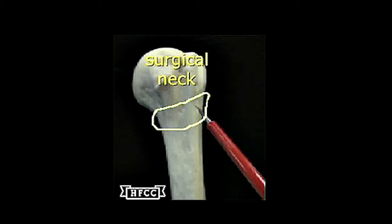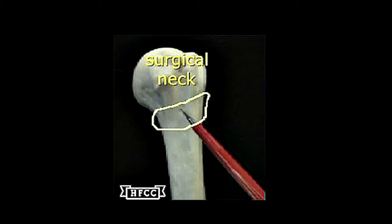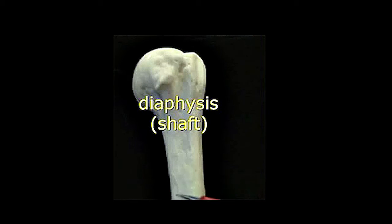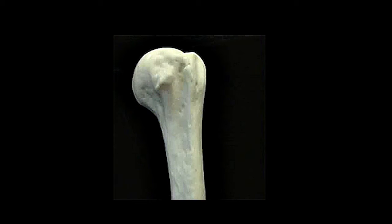The surgical neck, this is the part of the humerus that tends to break, and so surgery is needed here to reattach it and hold it together. And here's the diaphysis that's continuous with the distal end that I just had in the video.